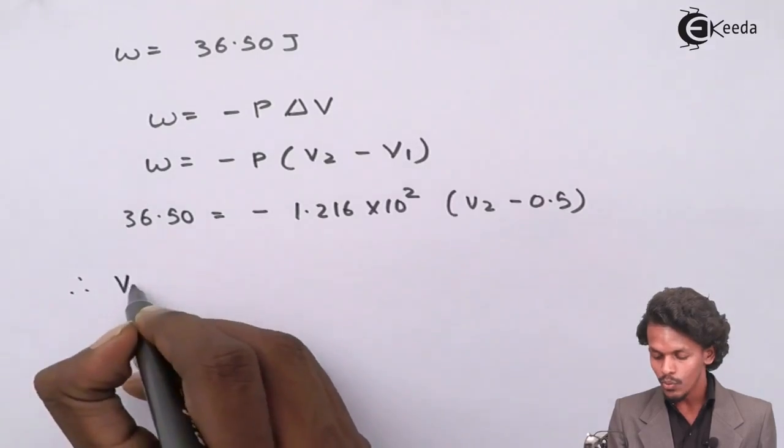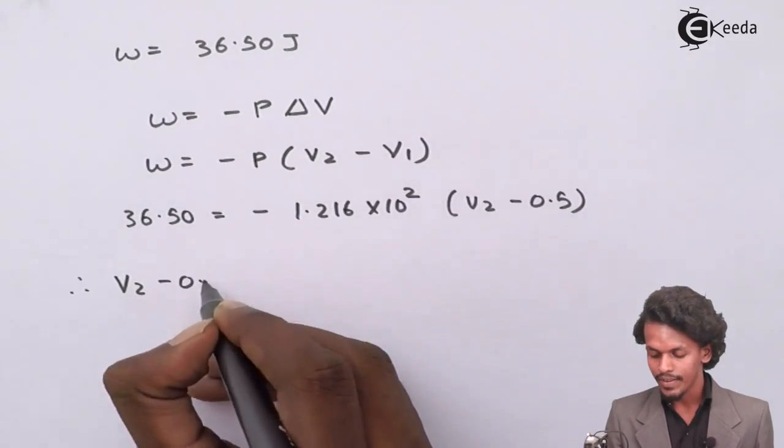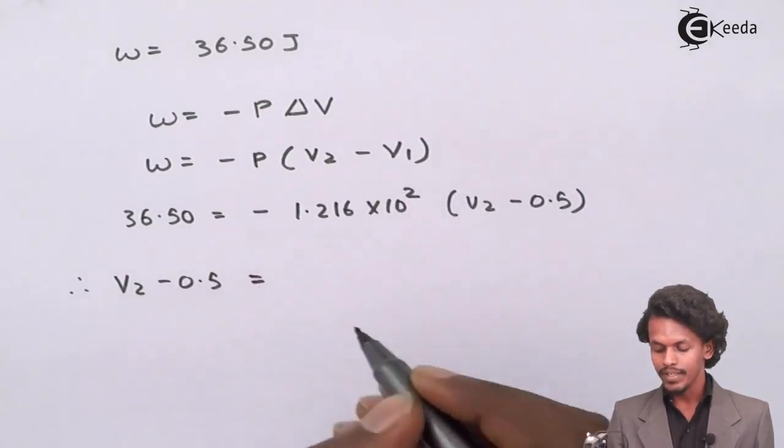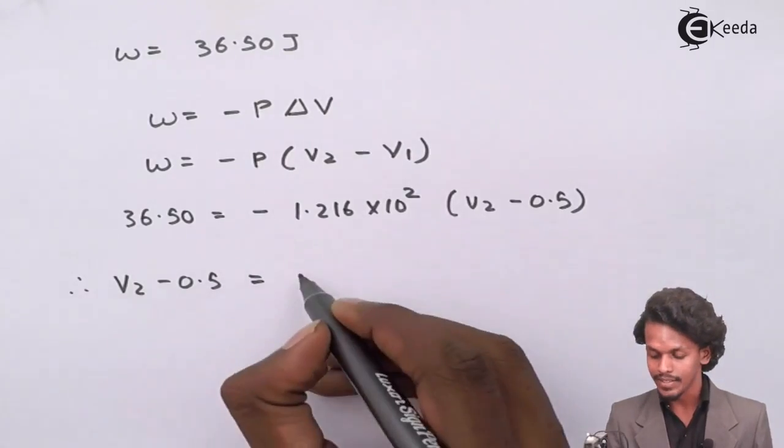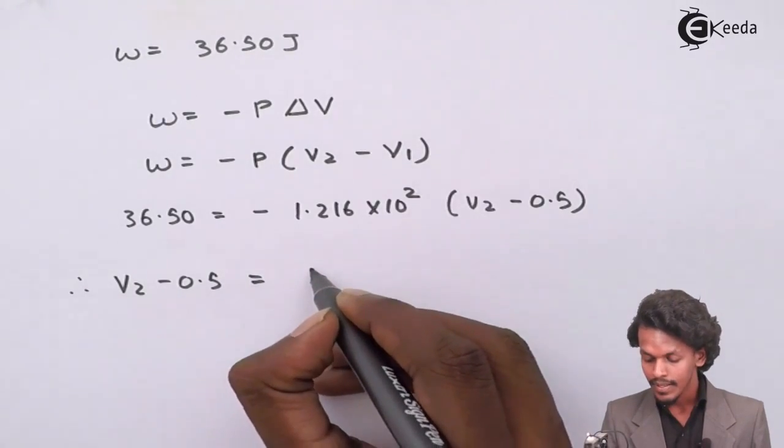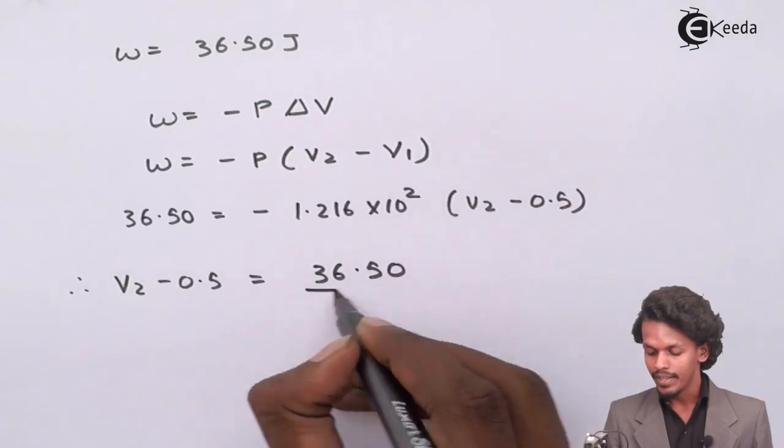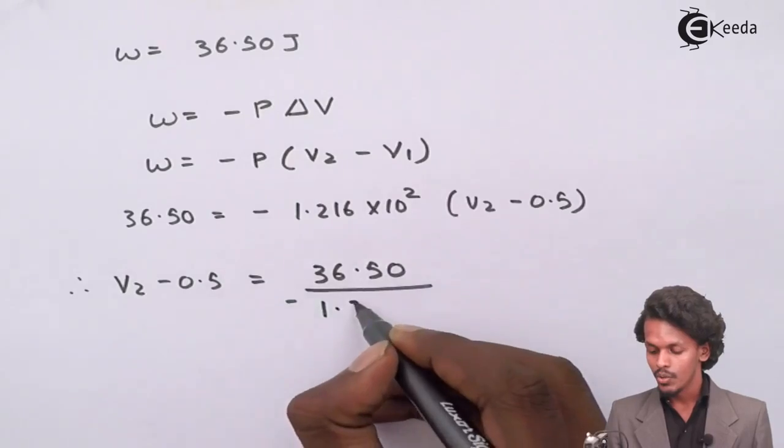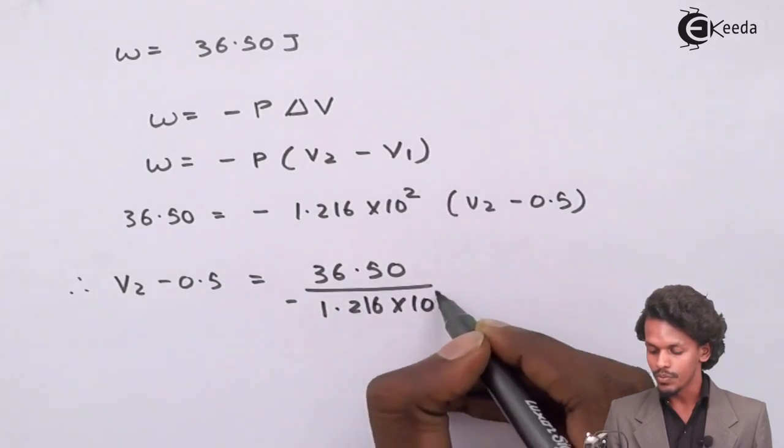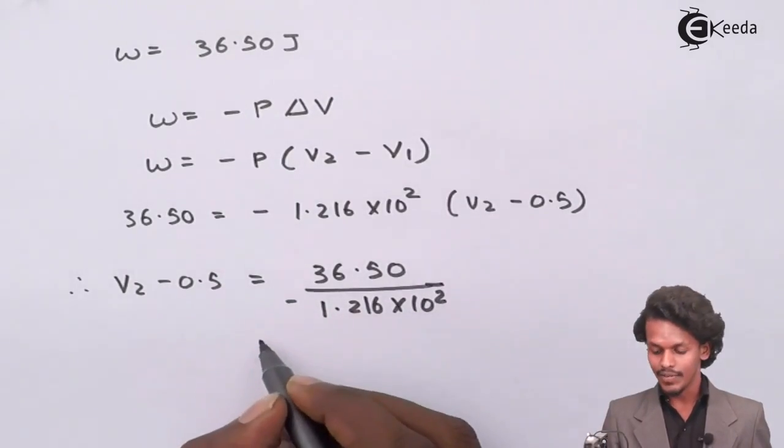Therefore V₂ - 0.5, I could write this equation as 36.50 divided by -1.216×10². Let us see what is the answer that we could get.